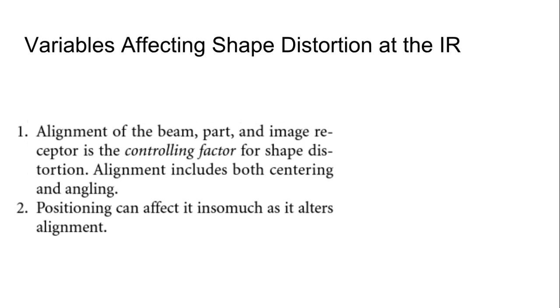Excuse me, shape distortion. So this is the part where we have to talk about the tube moving around and angles. So alignment of the beam, part, or image receptor is going to be the controlling factor for shape distortion. Remember, shape distortion is distinct from size. Size distortion will only occur if you have OID or SID. But if there is an angle on the beam itself, right, if the tube is angled, or if the part is not parallel to the image receptor.